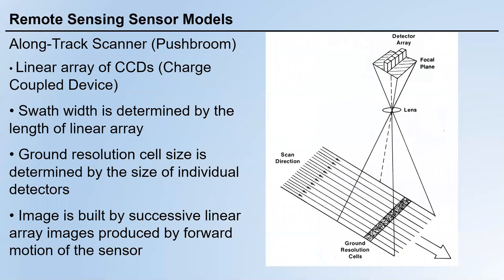Now let's talk about along-track scanning or push broom scanner. In this type of sensing system, there is a linear array of CCDs, or charge-coupled devices. CCDs are everywhere today — in your phone, in your camera. Here we have an array of CCDs where each small element is a detector. There is no rotating mirror in this system.